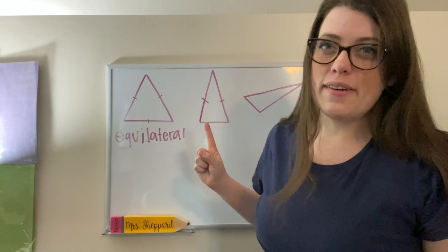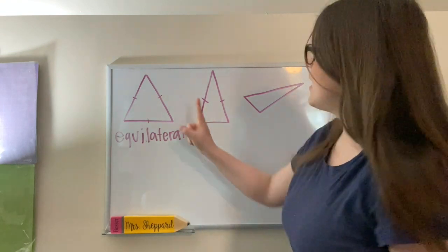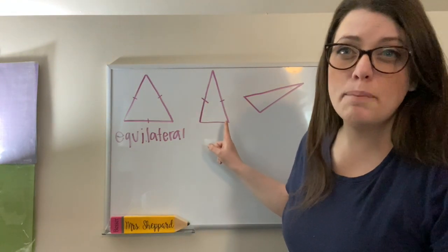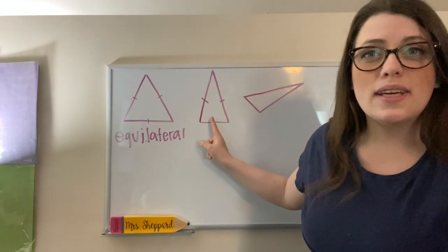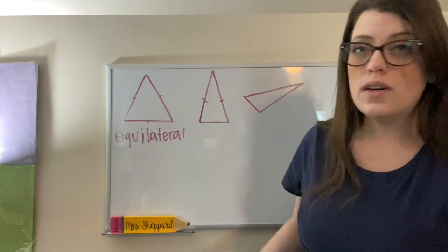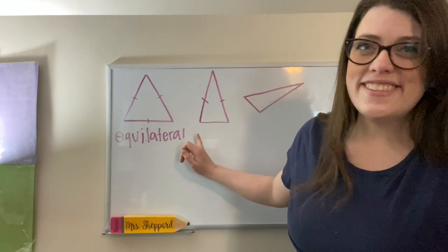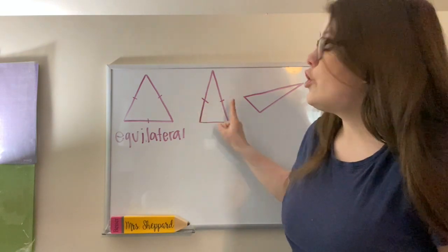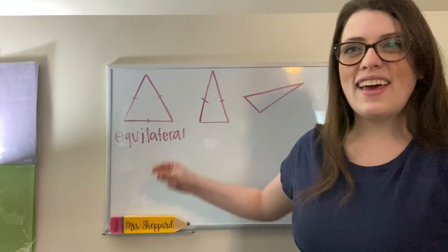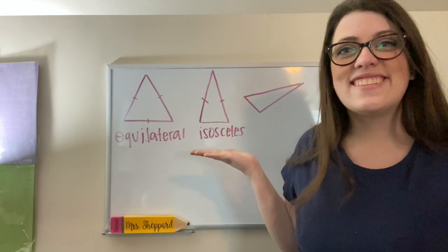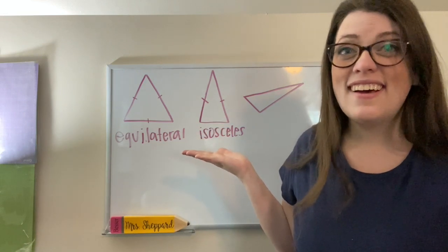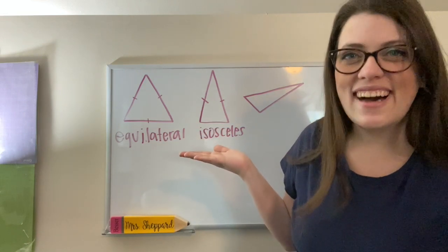This is the next type of triangle we're going to look at. Notice that these two sides have the same markings on them. That means that these two sides are equal, but this third side is not. When we have two sides in a triangle that are the same length, we call that an isosceles triangle. This word is pronounced isosceles.